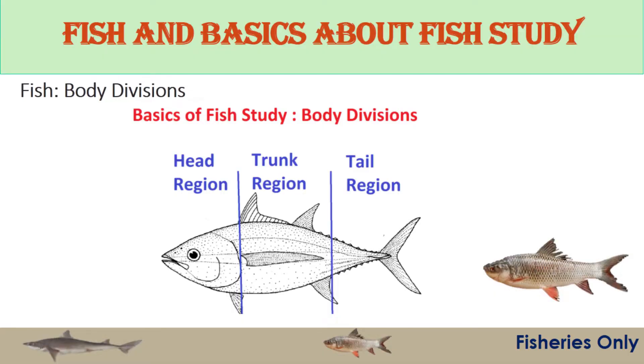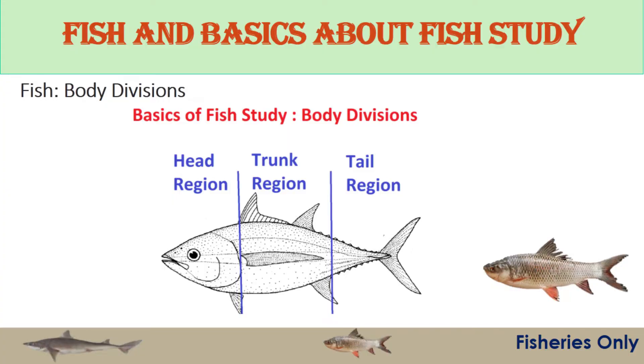Before we study the fish, we have to know the terminology about the body divisions of the fish. The fish body is divided into three parts: the first anterior part is the head region, the middle is the trunk region, and the posterior is the tail region. This applies to both cartilaginous and bony fishes.